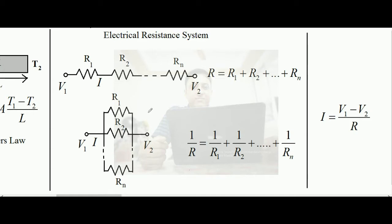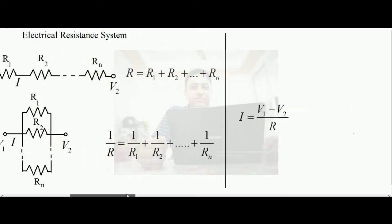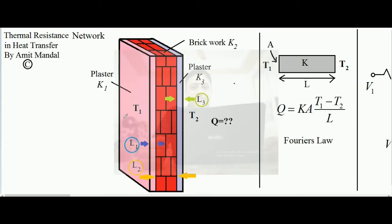The thermal resistance concept is analogous to the electrical resistance concept. This wall consists of three conductors one after another, starting from temperature t1 and ending at t2. Since they are arranged one after another, they are in series. The effective thermal resistance will therefore be the algebraic addition of all the thermal resistances: the resistance of the left plaster, the brickwork, and the right plaster.